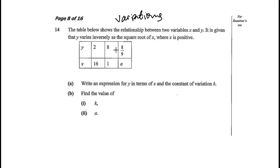So we've got variables x and y, and it is given that y varies inversely as the square root of x, where x is positive. The table gives us pairs: when y is 2, x is 16; when y is 8, x is 1; and so on. Part (a) says: write an expression for y in terms of x and the constant of variation k.